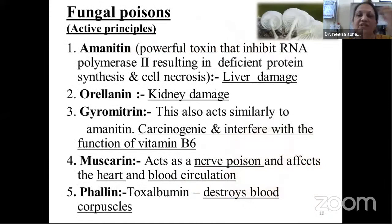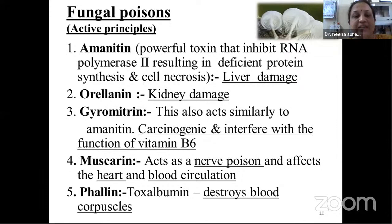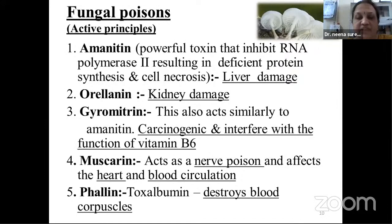Regarding fungal poison or active principles, the five major active principles are: amanitine, a powerful toxin that inhibits RNA polymerase 2, resulting in deficient protein synthesis and cell necrosis — causing liver damage. Oraline causes kidney damage. Gyromitrine acts similarly to amanitine, is carcinogenic, and interferes with vitamin B6. Muscarine acts as a nerve poison affecting the heart and blood circulation. Phalline is a toxic albumin that destroys blood corpuscles.